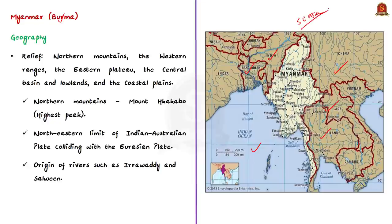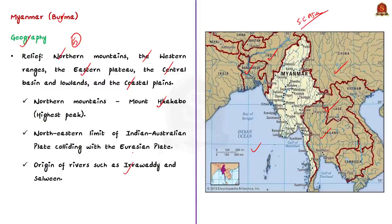Myanmar as a whole can be divided into five physiographic regions: the northern mountains, the western ranges, the eastern plateau, the central basin and lowlands, and the coastal plains. Mount Hkakabo Razi is the highest peak in Myanmar. The mountain ranges of Myanmar are the sources of Asia's great rivers such as the Ayeyarwady, rising in Myanmar itself, and the Salween, which rises in China. This region is also known for plate tectonics, as the northeastern limit of the Indian-Australian plate collides with the southern edge of the Eurasian plate.